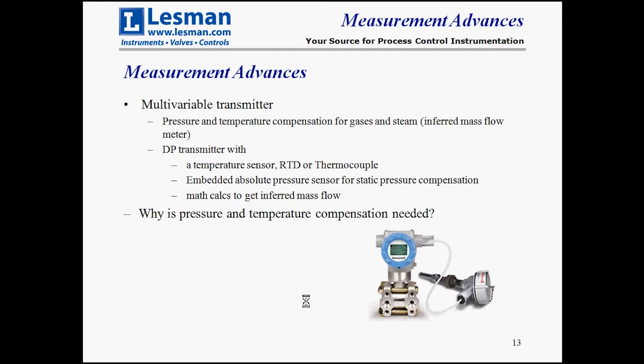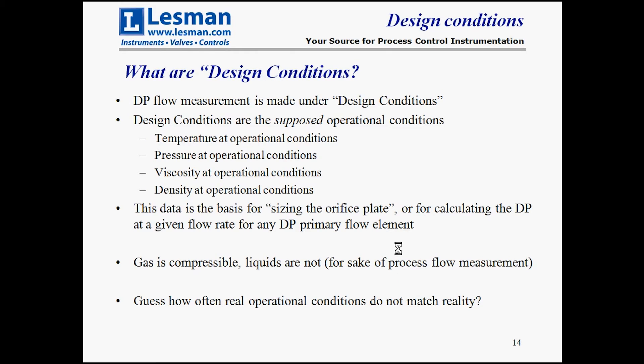Looking at measurement advances over the past 20 years, the multivariable transmitter does pressure and temperature compensation for gases and steam, giving an inferred mass flow measurement. It's a DP transmitter connected with an RTD or thermocouple temperature sensor. The reason you need this compensation is that all DP devices are designed to design conditions—a specific operating temperature, pressure, viscosity, and density. Gas is compressible, and design conditions are frequently not met under real operational conditions.